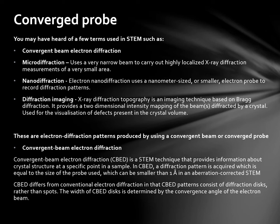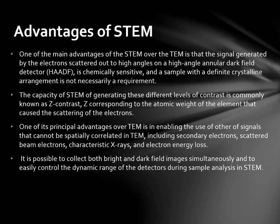One of the main advantages of STEM over TEM is that the signal generated by electrons scattered out to a high angle on a high-angle annular dark field detector is chemically sensitive, and a sample with a definite crystalline arrangement is not necessarily a requirement. The capacity of STEM to generate these different levels of contrast is commonly known as Z-contrast, Z corresponding to the atomic weight of the element that caused the scattering of the electrons. One of the principal advantages over TEM is that STEM enables the use of other signals that cannot be spatially correlated in TEM: secondary electrons, backscattering electrons, characteristic x-rays, and electron energy loss. It is possible to collect both bright field and dark field simultaneously and easily control the dynamic range of detectors during analysis in STEM.